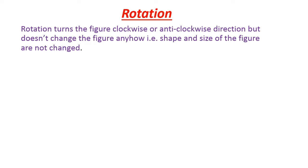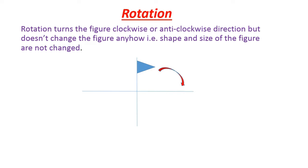I will explain what clockwise and anticlockwise directions are. If I give you two axes and a figure, and ask you to rotate this figure clockwise, that means rotating the figure from left to right — this is the clockwise direction. Rotation of a figure from right to left is the anticlockwise direction.